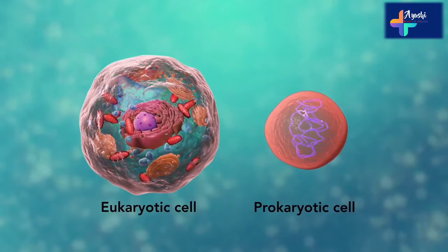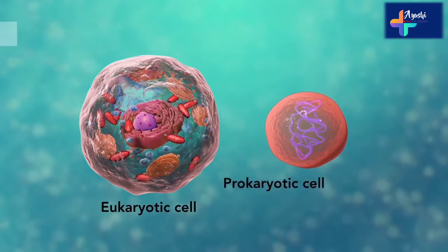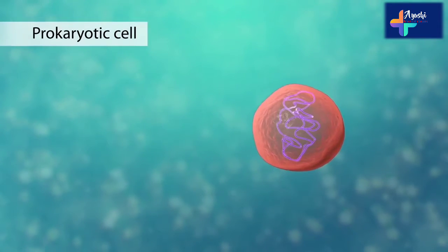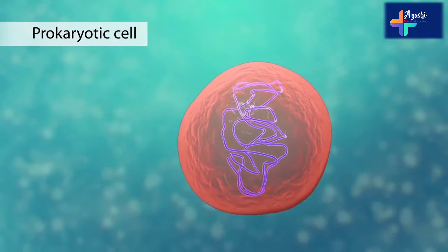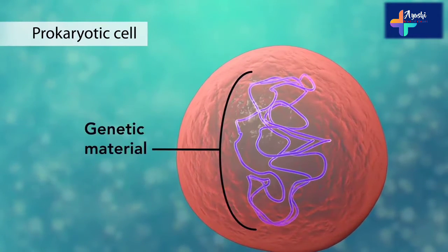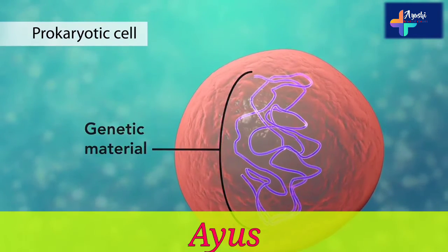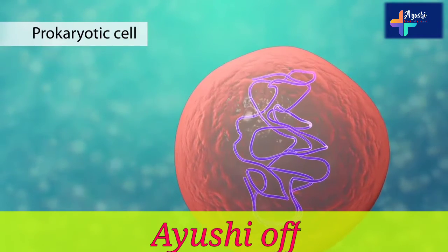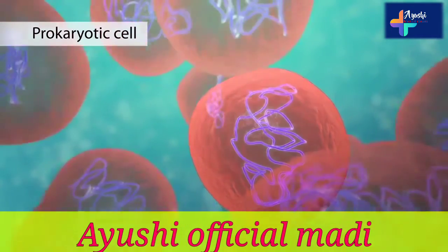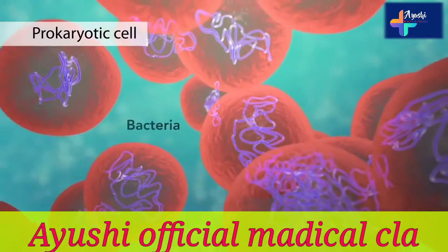The second category is prokaryotic cells. They don't have a nucleus or membrane enclosed organelles. They do have genetic material but it's not contained within a nucleus. Prokaryotic cells are always one celled or unicellular organisms such as bacteria.